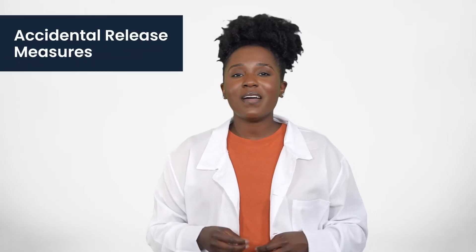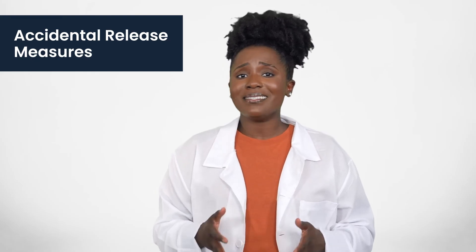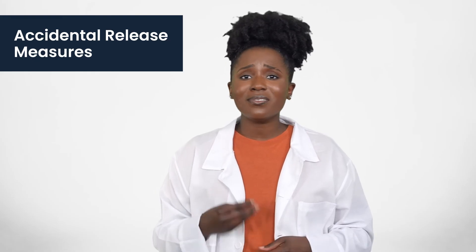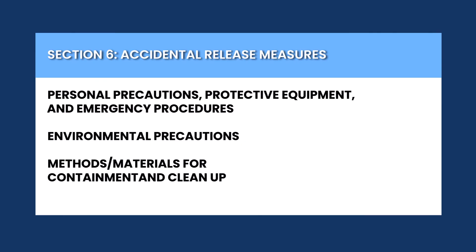Section 6 of the SDS provides recommendations on what to do in case the chemical is accidentally spilled, leaked, or released. This includes personal precautions like appropriate protective equipment, environmental precautions such as how to dispose of the chemical and who to contact in case of environmental contamination, and appropriate methods and materials for containment and cleanup.